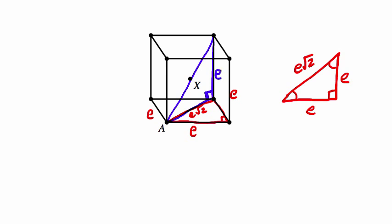And that right triangle has one leg of e√2, and of course the other leg is e, because we know that the edge lengths are e. So now we've got another right triangle, and this is not drawn to scale obviously, but that's e, and this is e√2.